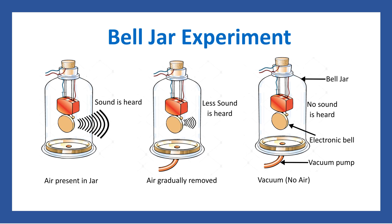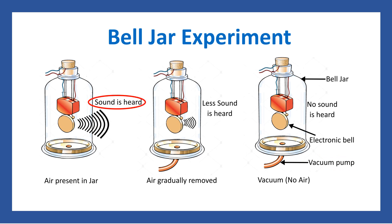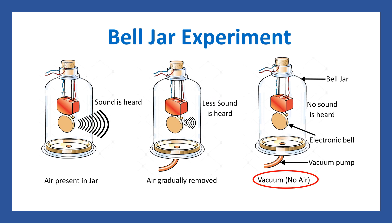To prove that sound cannot travel in a vacuum, scientists use the bell jar experiment. A bell jar is a glass jar shaped like a bell. Inside it we have an electronic bell as the sound source, and a vacuum pump that sucks the air out. When air is present, the sound is heard. As the vacuum pump gradually removes the air, less sound is heard. When the bell jar is a complete vacuum, no sound is heard at all.